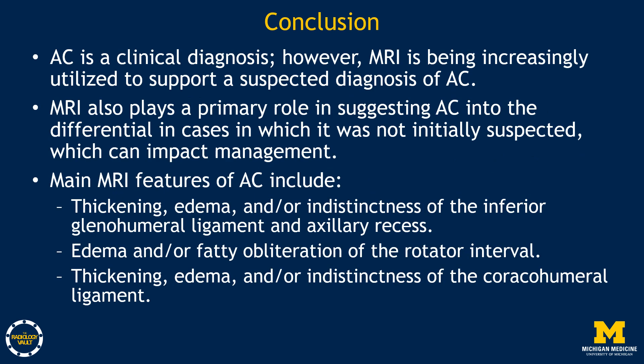In conclusion, adhesive capsulitis is a clinical diagnosis. However, MRI is being increasingly utilized to support a suspected diagnosis of adhesive capsulitis. MRI also plays a primary role in suggesting adhesive capsulitis in the differential in cases in which it was not initially suspected, which can impact management. The main MRI features include thickening, edema, and/or indistinctness of the inferior glenohumeral ligament and axillary recess — the most specific imaging feature. Edema and/or fatty obliteration of the rotator interval can also be seen, as can thickening, edema, and/or indistinctness of the coracohumeral ligament. It is important to note that these imaging features, although suggestive of adhesive capsulitis, are not necessarily diagnostic and may be present due to other medical conditions affecting the shoulder.